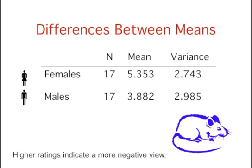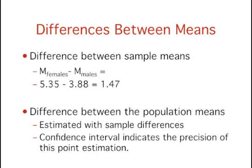As you can see, the females rated animal research as more wrong than did the males. This sample difference between the female mean of 5.35 and the male mean of 3.88 is 1.47.